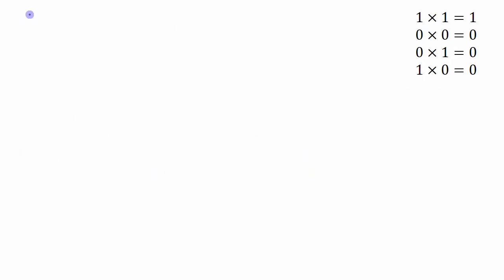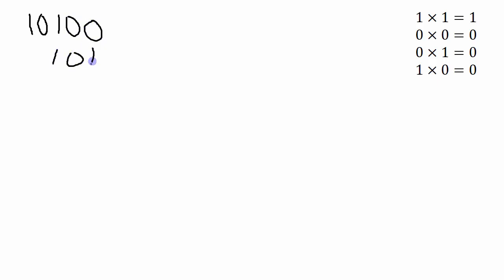Alright, example number two. Let's go with 10100 times 101. Now we do this column by column multiplication and then we'll add up each of the rows that we get.